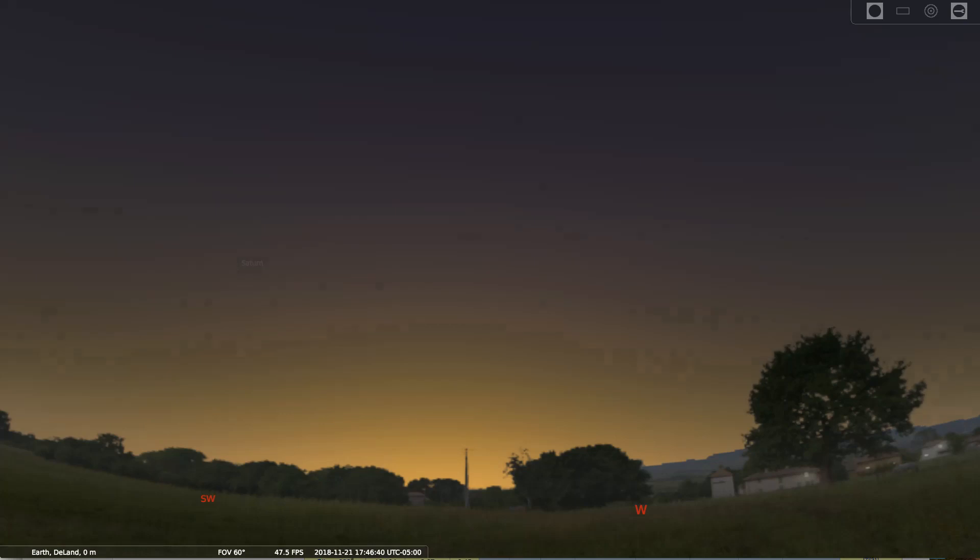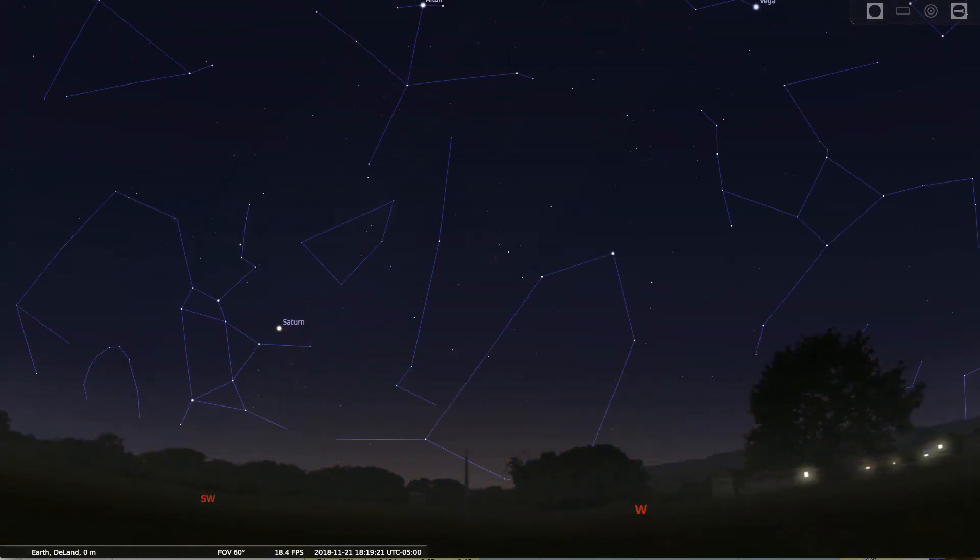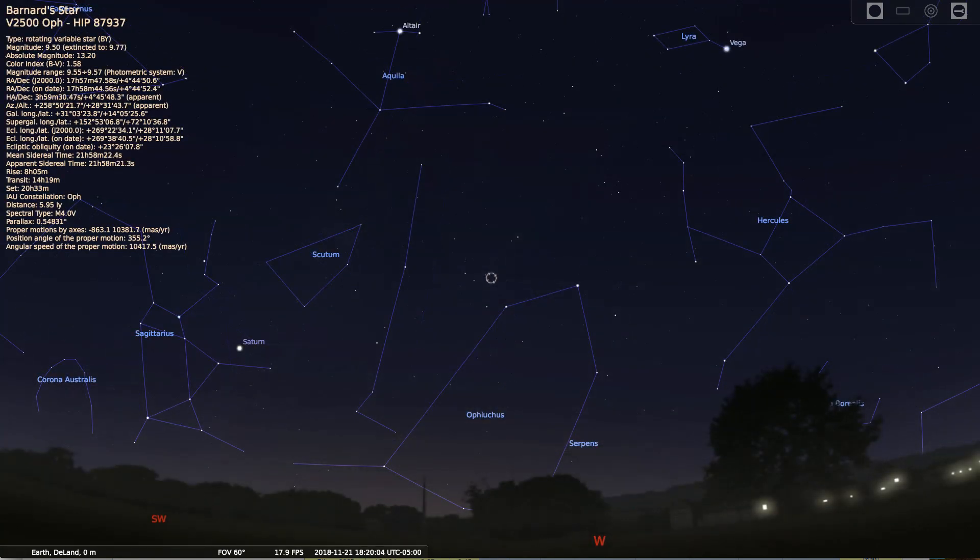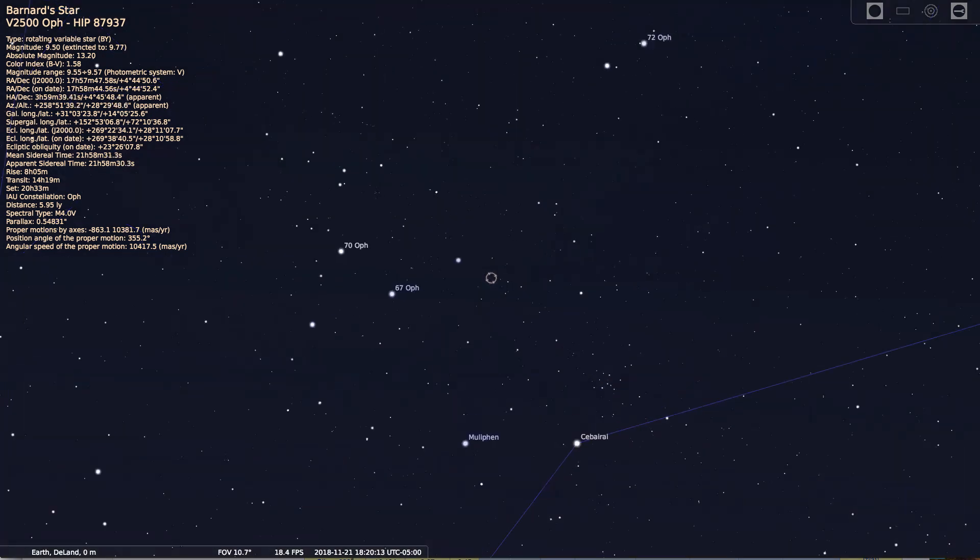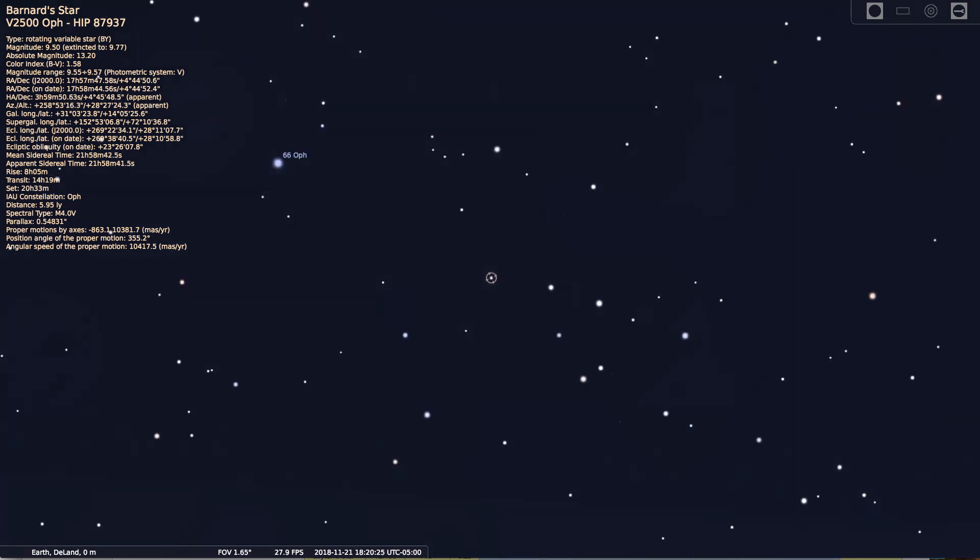In our night sky, located in the constellation Ophiuchus, there is an unremarkable red dwarf star some six light years away. After the three stars of the Alpha Centauri system, this is the closest star to us. Known as Barnard's star, it is invisible to the unaided eye. You need a telescope to see it from Earth.